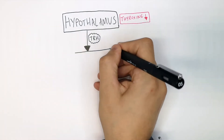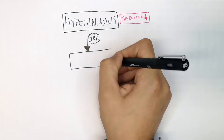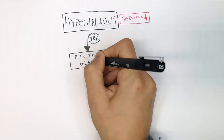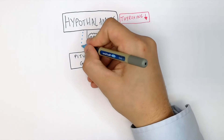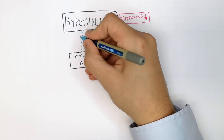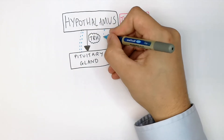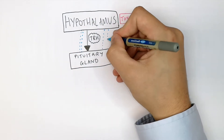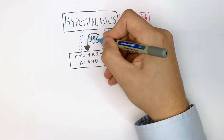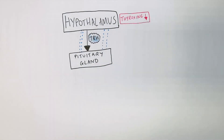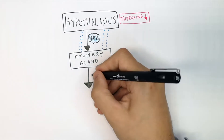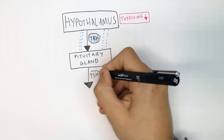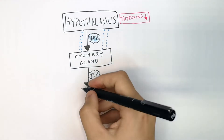TRH travels in the blood to the pituitary gland. TRH then stimulates the production of TSH from the pituitary gland.